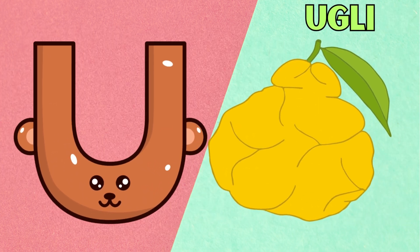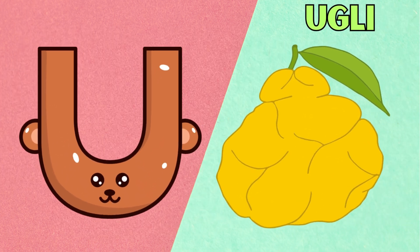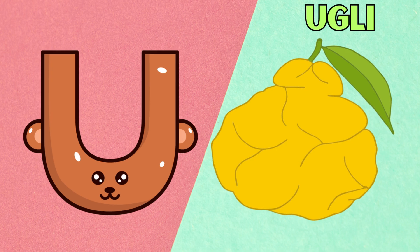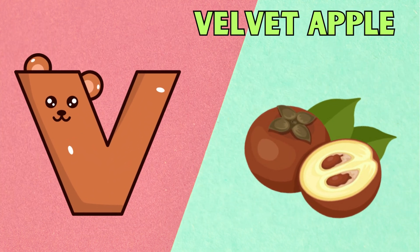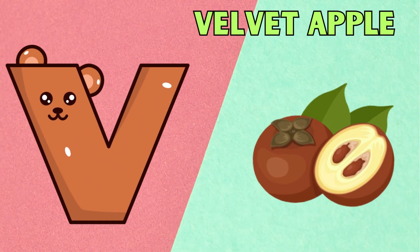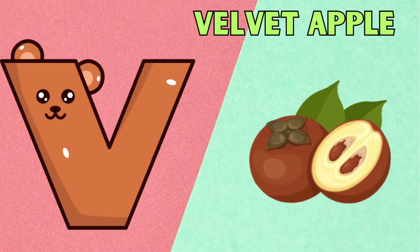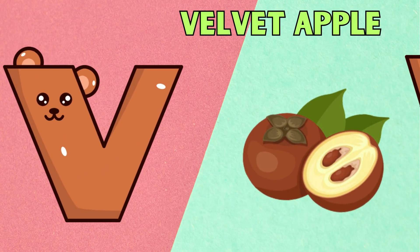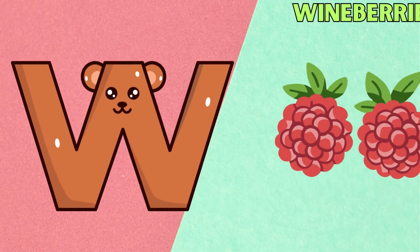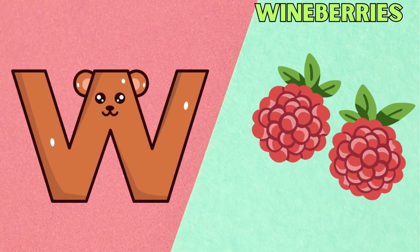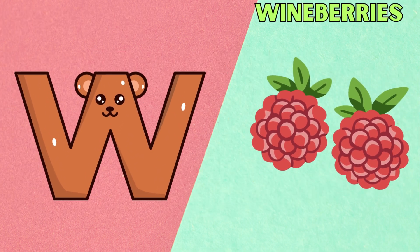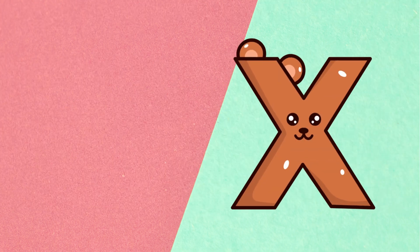U is for Ruvli. U, U, U. V is for Velvet Apple. V, V, Velvet Apple. W is for Wine Berries. W, W, Wine Berries.